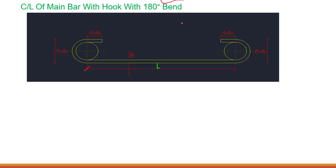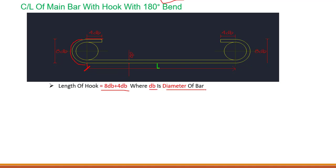Now let's look at the main bar. We have two conditions: main bar with 180 degree bend and main bar with 90 degree bend. For the 180 degree bend, this is the shape of the main bar with a hook of 180 degrees. The hook length is basically 12dB, where 4dB is from one position and 8dB from the other, making a total of 12dB, where dB is the diameter of the bar.